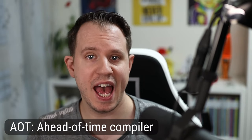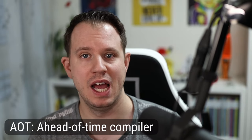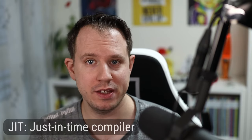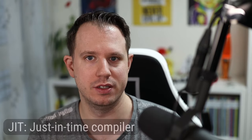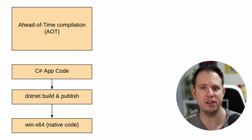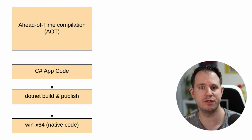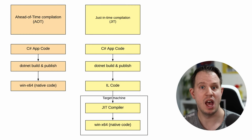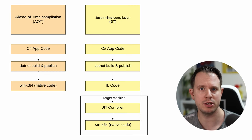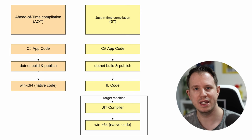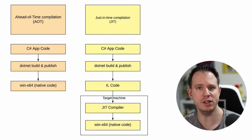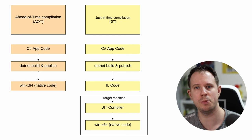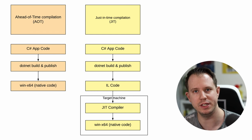AOT stands for ahead-of-time and is the counterpart to JIT, or just-in-time compilation. With ahead-of-time compilation, we generate the native code that runs on the machine right with the compilation of the application. Whereas with the traditional JIT compiler, we turn our C# code into IL code that will then be transformed into native code using the JIT compiler on the target machine.